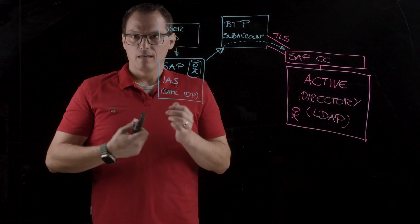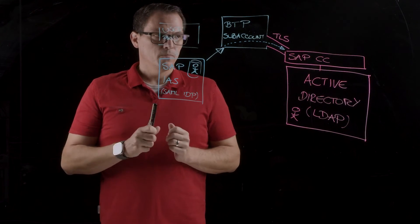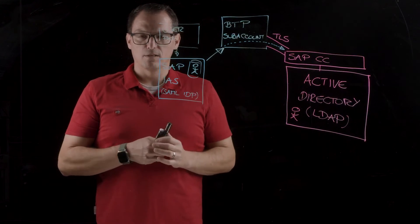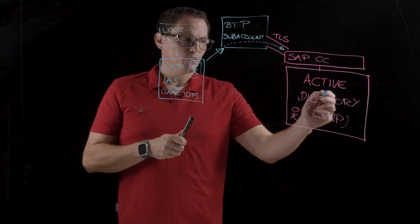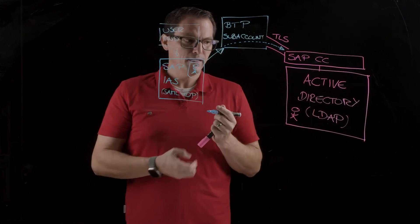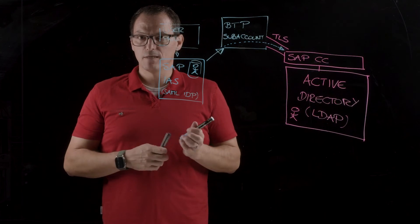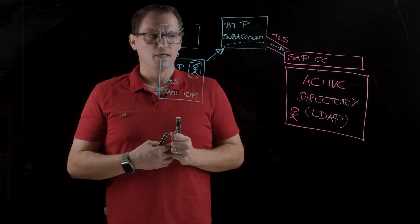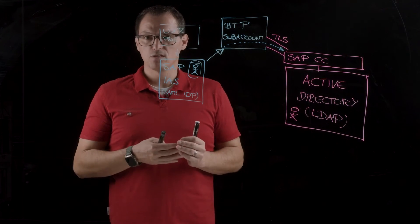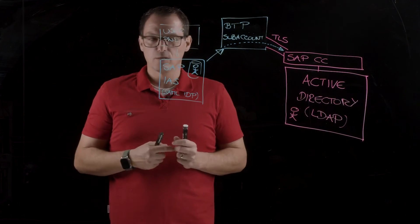And this can be any application in the business technology platform that uses this. There is a difference between BTP and NEO subaccounts, because with NEO subaccounts, you cannot just call an Active Directory. With NEO, you can also call the SAP application server Java with the UME behind. But we will focus on the Active Directory because this is the use case that we typically see in projects and in the real world.